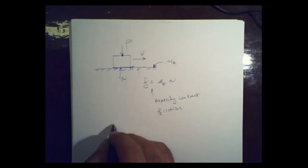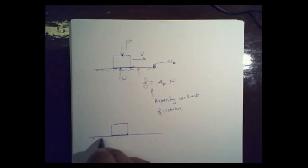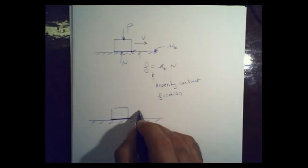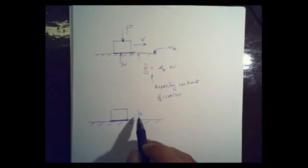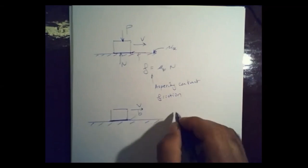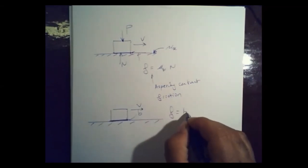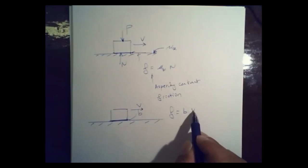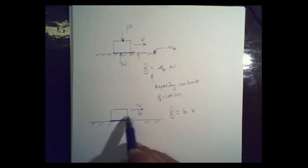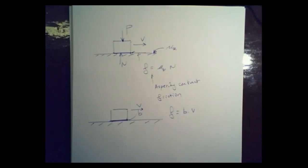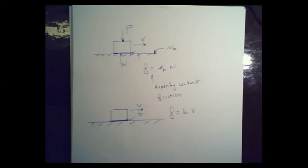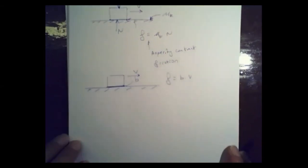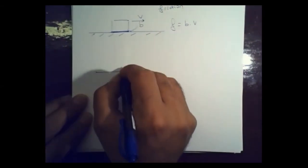In the case where a similar object slides on a lubricated surface with damping coefficient B, if the object moves with velocity V, then the friction equals B times V — proportional to velocity. We won't be dealing with this for clutches, because clutches are asperity contact friction devices where friction is directly related to the normal force and not the velocity.